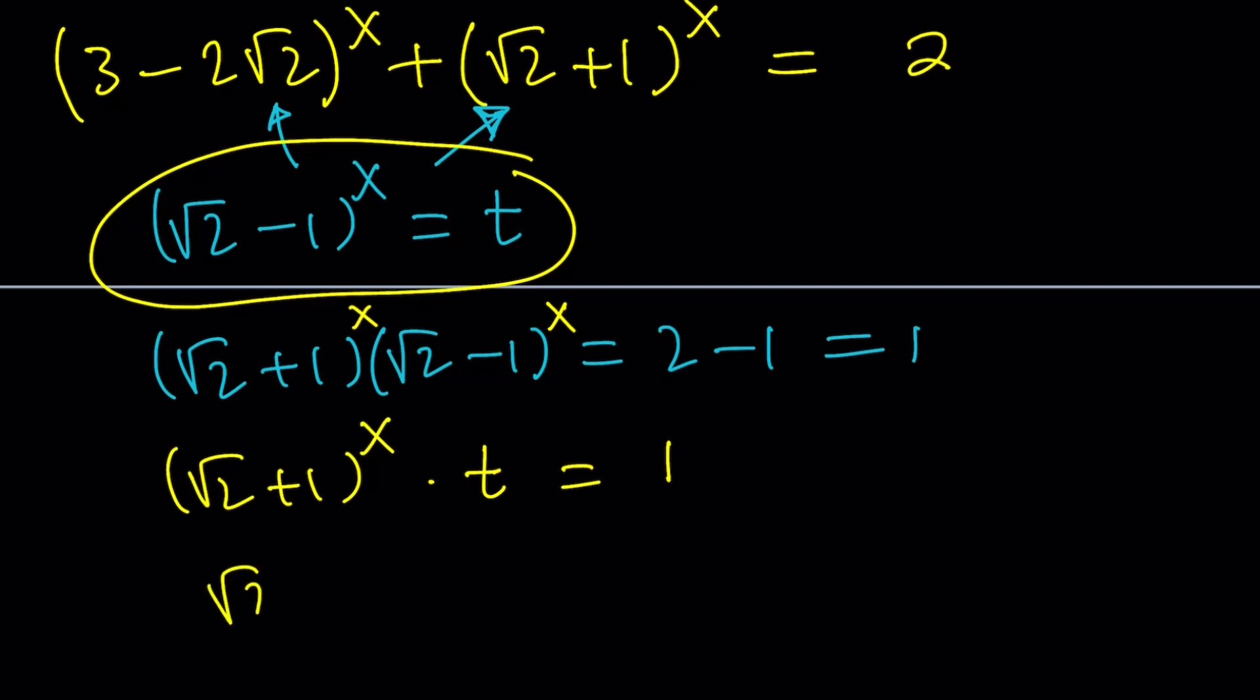So (√2+1)^x is multiplied by t and this equals 1. So from here, (√2+1)^x can be written as 1/t which is the reciprocal of t. So (√2+1)^x and (√2-1)^x are not just conjugates, they're also reciprocals because their product is 1.